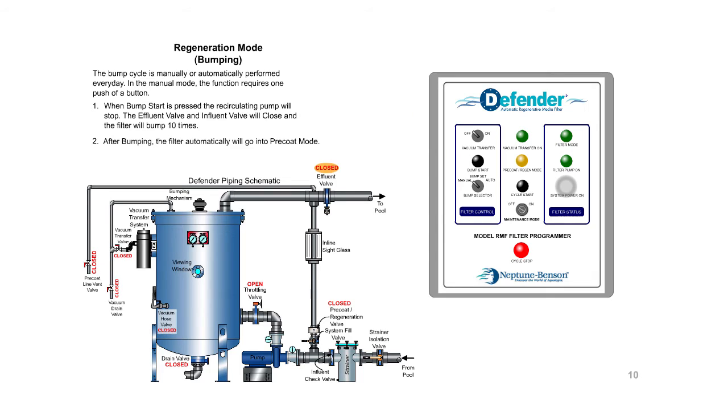The bump cycle is manually or automatically performed every day. In the manual mode, the function requires one push of a button. When bump start is pressed, the recirculating pump will stop. The effluent valve and influent valve will close and the filter will bump 10 times.